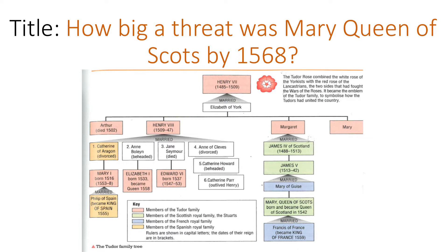One thing I want to mention briefly is that it's important we realise that Mary Queen of Scots and Mary I are different people. Mary I is Bloody Mary - she's the Queen before Elizabeth in England and is Henry VIII's first child. Mary Queen of Scots is different; she is the granddaughter of Henry VIII's sister Margaret. It can be quite confusing with the same name, but helpfully both of them are Catholics.